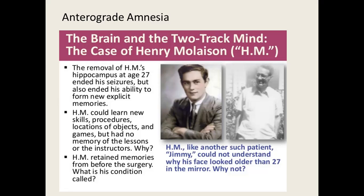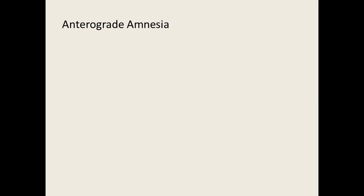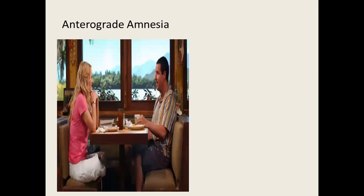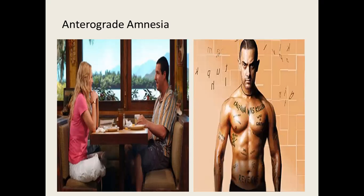The case of patient HM is a classic example: the hippocampus was removed at age 27. He could no longer form new memories — he could learn skills and recognize locations and objects, but could not form new long-term memories. He had anterograde amnesia. HM could not understand why his face looked older than 27 years later, because he only remembered his face from age 27. This was due to the surgical removal of the hippocampus causing anterograde amnesia.